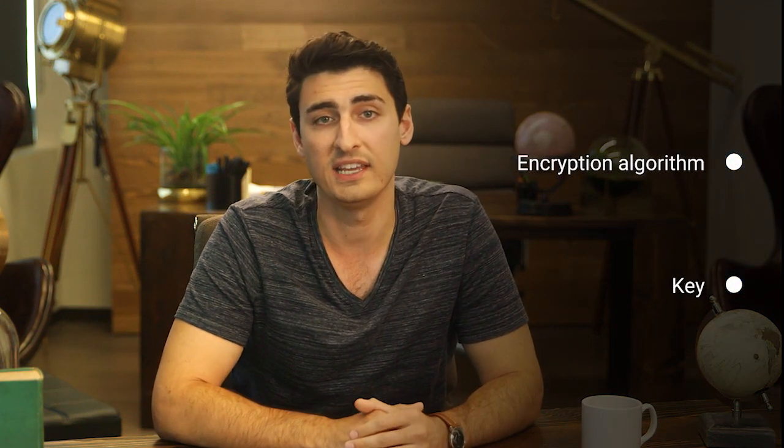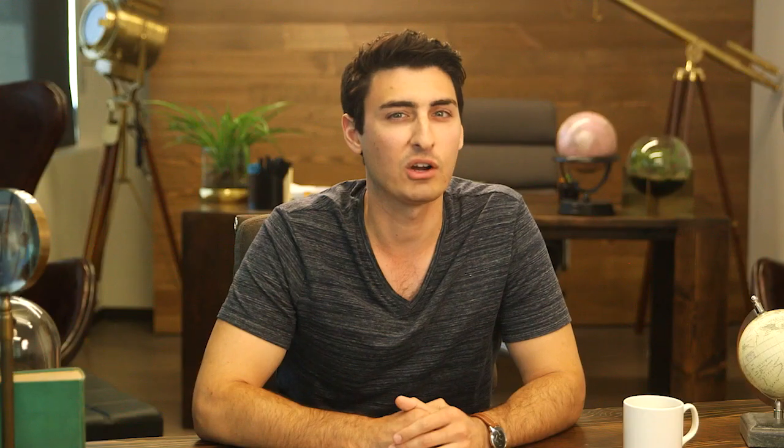A cipher is actually made up of two components: the encryption algorithm and the key. The encryption algorithm is the underlying logic or process used to convert plaintext into ciphertext — usually very complex mathematical operations. The key introduces something unique into your cipher. Without the key, anyone using the same algorithm would be able to decode your message. So first, you pick an encryption algorithm, then choose a key. Now you have a cipher to run your plaintext through and get encrypted ciphertext, ready to be sent out safely.